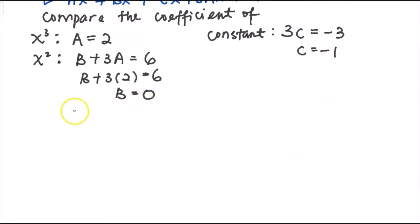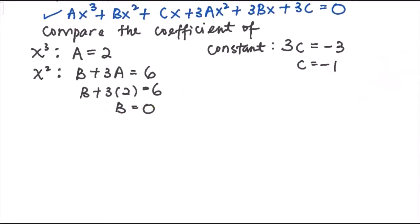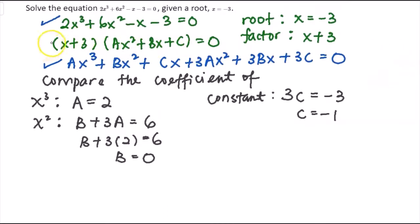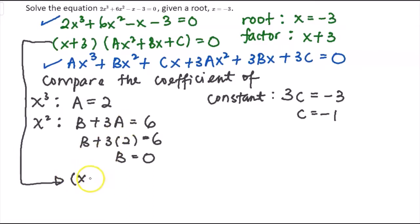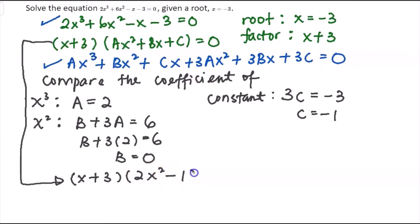Once done, substitute a, b, and c into the factored equation. You get (x plus 3) multiplied by (2x squared plus 0x minus 1), which simplifies to (x plus 3)(2x squared minus 1). This is the fully factored form of the cubic equation.